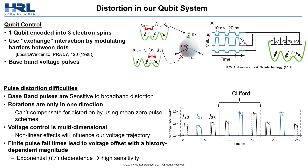One issue with baseband control is that it makes us sensitive to the effects of broadband distortion. Another feature of our qubit systems is that rotations are only in one direction, so we cannot compensate for pulse distortion by using mean zero pulse schemes. Most importantly, the finite pulse fall times will lead to a voltage offset with a history-dependent magnitude. Because the exchange interaction has an exponential dependence on voltage, we are especially sensitive to this effect.